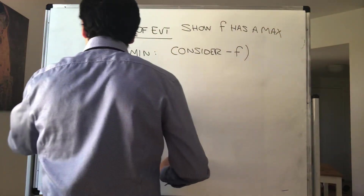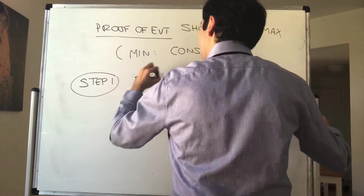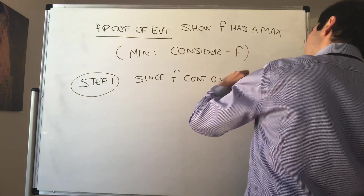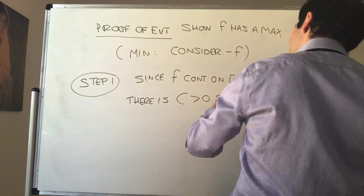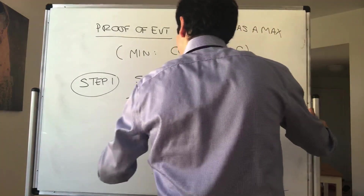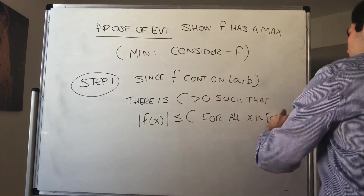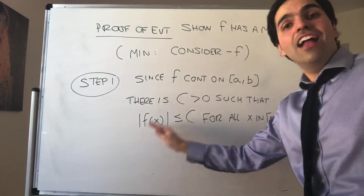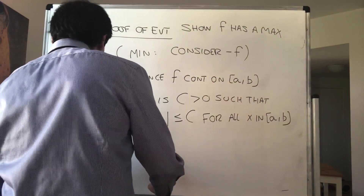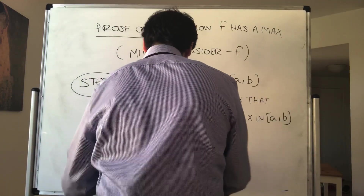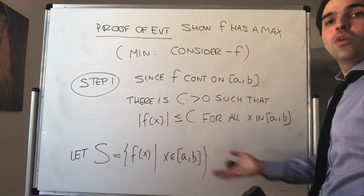Step one: since f is continuous on the interval [a, b], we know that f is bounded. So there is some constant C > 0 such that |f(x)| ≤ C for all x in [a, b]. This says the values of f are trapped between −C and C. Therefore, it's useful to consider all the values of f. Let S be the set of f(x) where x is in [a, b] — so all the values of f, sometimes also known as the range of f.